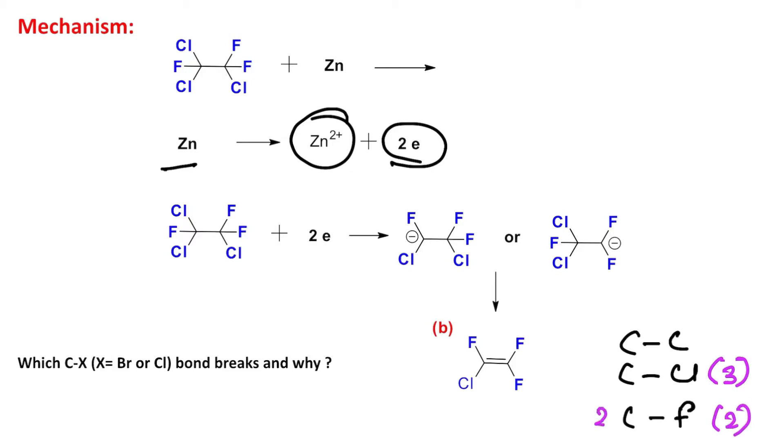Since carbon belongs to the second row element, in case of C-F bond the orbital overlap is very good. Consequently, the C-F bond is considered one of the strongest covalent bonds. So you can understand the C-Cl will be reduced.